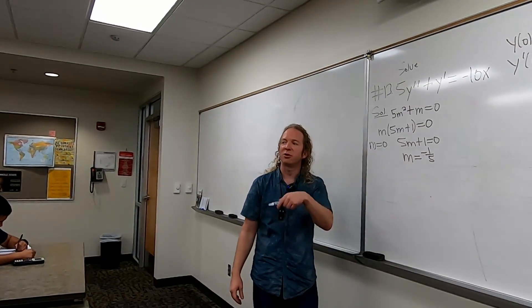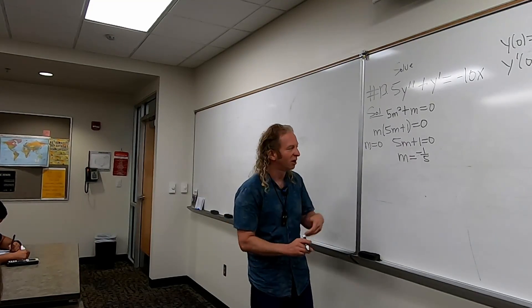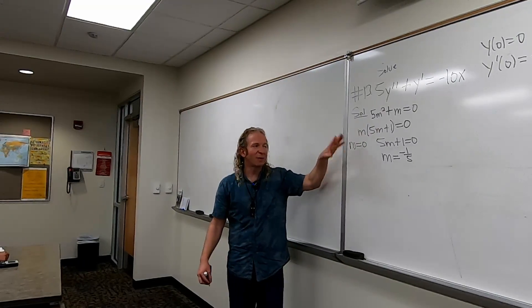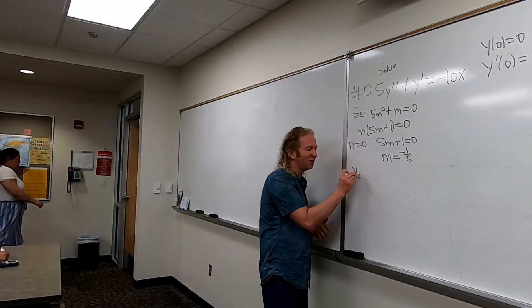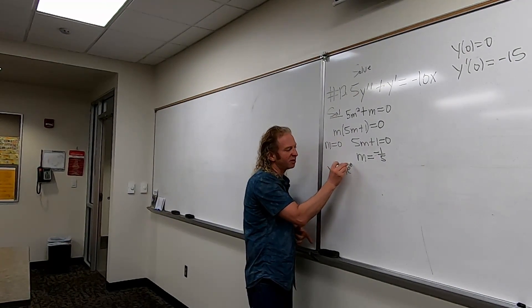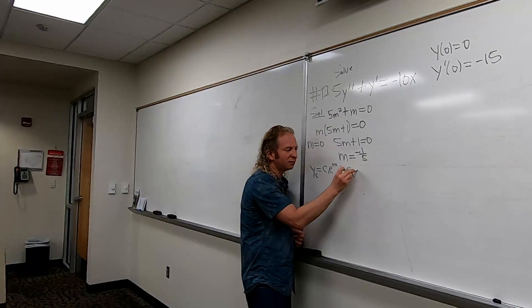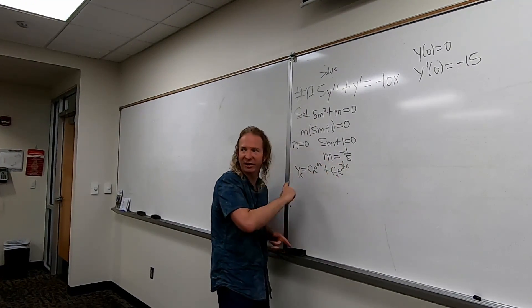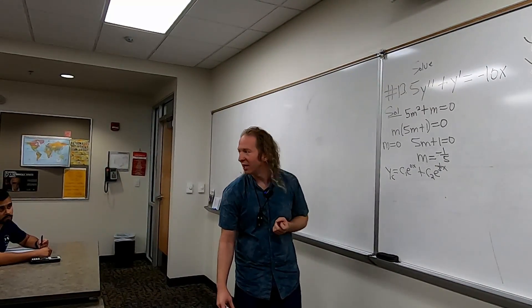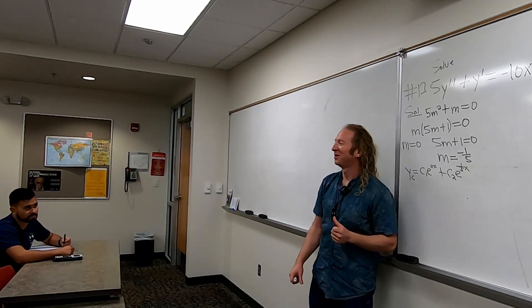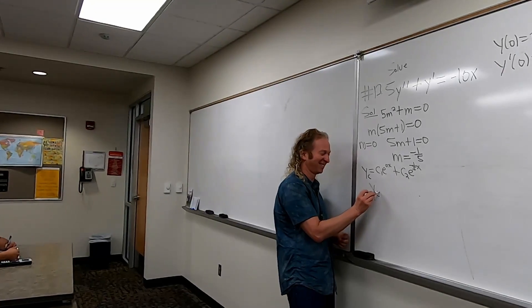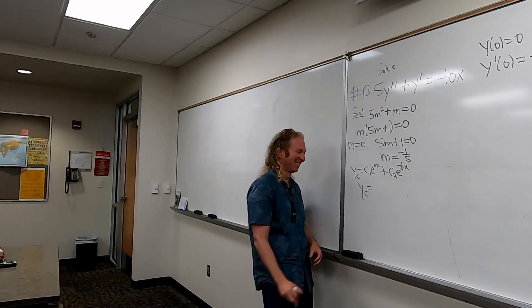So now we can write down the complementary solution or complementary function or the homogeneous function. It's YC. So it's really important if you're doing this one to write YC. Because the steps aren't given, so you don't confuse yourself. So YC. So if you don't put YC, I might take a point off because it's wrong. So it's C1 e to the 0x plus C2 e to the negative 1 fifth x. You wrote 1 fifth, so 1 fifth, so you're safe.